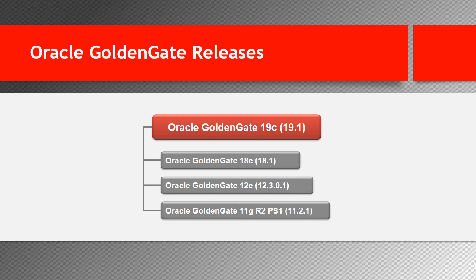At the time of this recording, Oracle GoldenGate 19C is the latest release of this software product. The slide lists the latest Oracle GoldenGate releases starting from 11G up to 19C. The latest release number for 11G is 11.2.1, and for 12C it is 12.3.0.1. There are earlier releases, but this slide displays only the latest ones. For Oracle GoldenGate 18C, there is one release: 18.1.